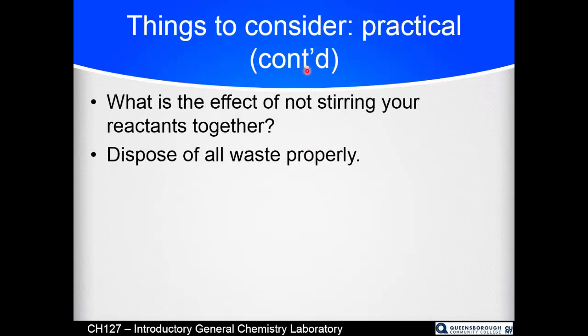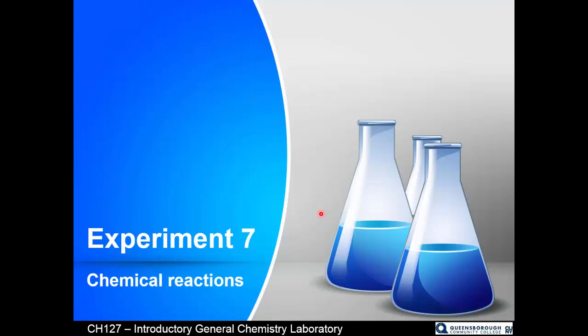Other practical things to think about: what would happen if you didn't stir the components together? The two components may not have contacted each other, and you might not be able to tell if a reaction occurred just because you hadn't stirred it. And of course, you need to dispose of all your waste properly. This is a very qualitative lab — you're looking at what happens in each test tube when you mix the components together, carefully feeling the test tubes to see if they get hot, and looking for color changes and bubbles as evidence of reactions. Fundamentally, this lab supports the lecture in that you need to predict the products of the reactions, balance the equations, and then qualitatively describe what happens as you watch each reaction occur.